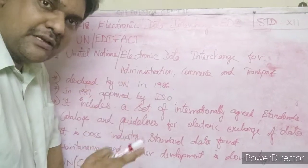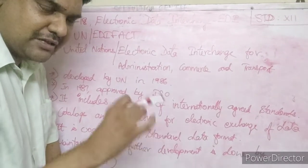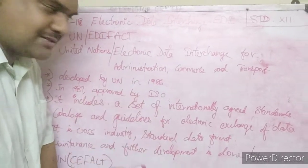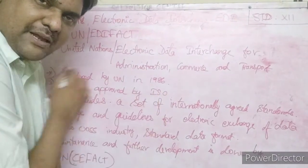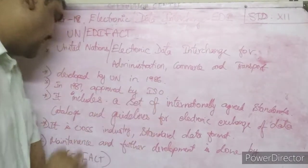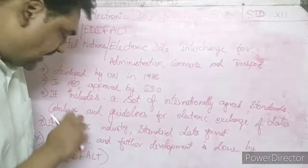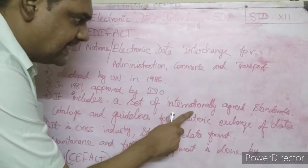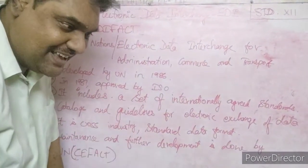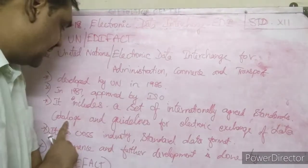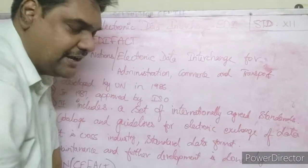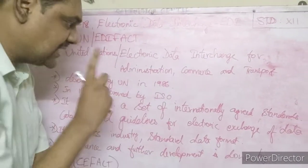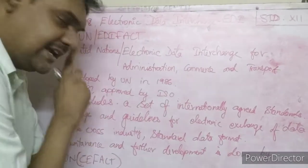Just like a business receives an ISO certificate by following business rules and regulations, UN EDIFACT is ISO approved. It includes a set of internationally agreed standards, a catalog, and guidelines for the electronic exchange of data — covering standard format and rules within EDIFACT.